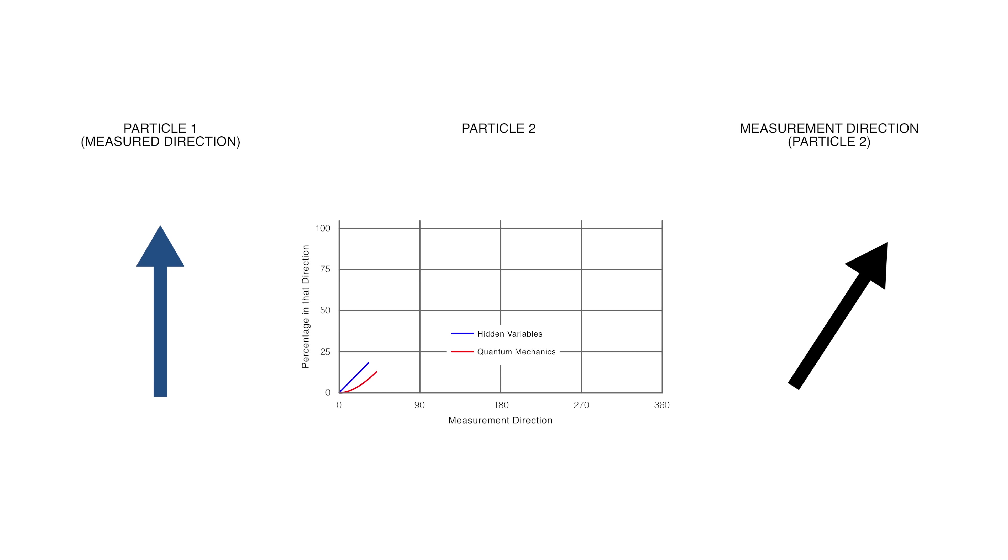If the second arrow is pointing at 90 degrees to the right, the second measurement can be right or left with equal probability. So it will be to the right only 50% of the time. If the second arrow is pointing downward, we know that the second measurement always is downward, so it is in that direction 100% of the time. And as we go to 360 degrees, the pattern is reversed.